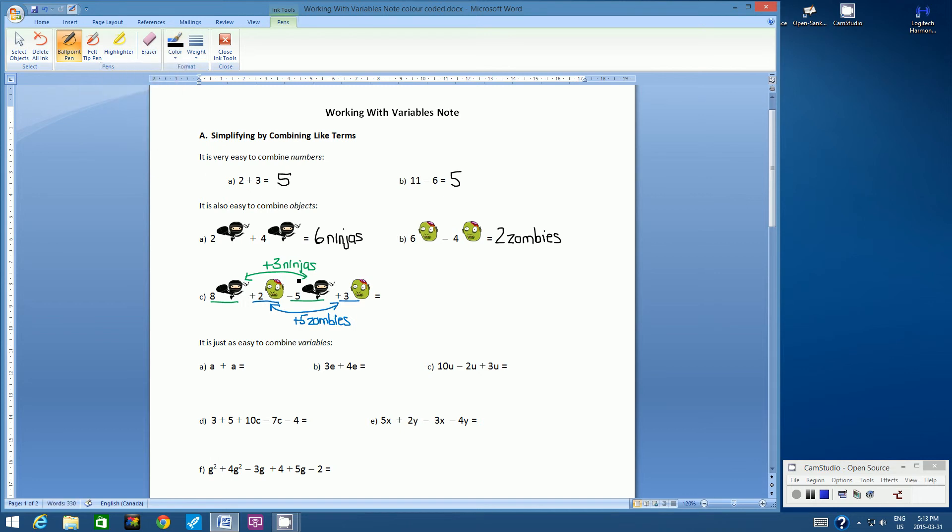So see how we group those things together that were similar. So when we write our answer, we can write it one of two ways. We can put the ninjas first. So first, we can have 3 ninjas plus 5 zombies. And this is very important, this plus sign here, because it was actually positive 5 zombies.